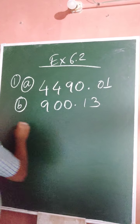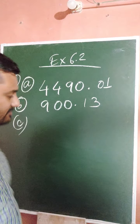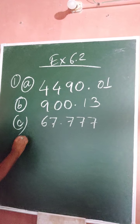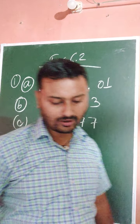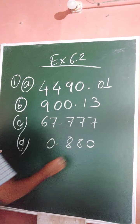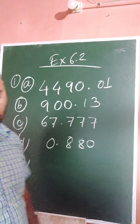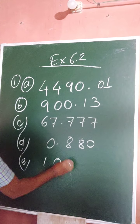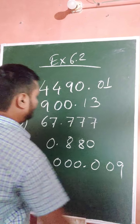Part (c) is 67.777. Part (d): 10000.8800. Part (e): 110010000.09. These are the answers for question number one.